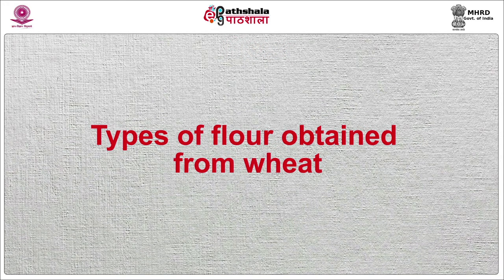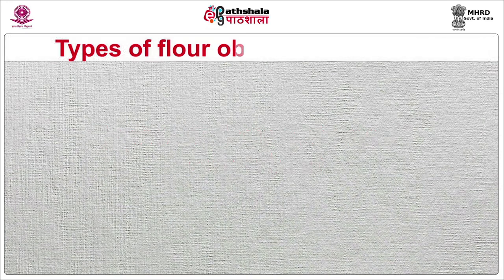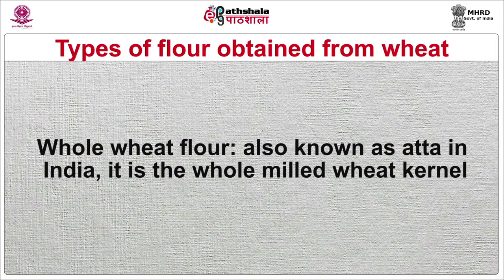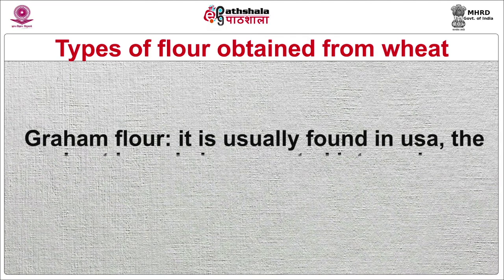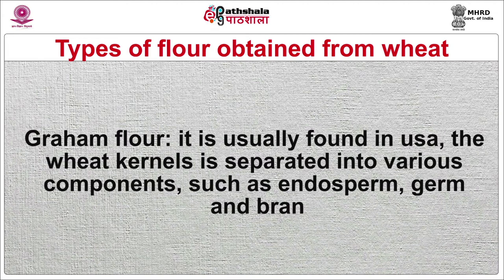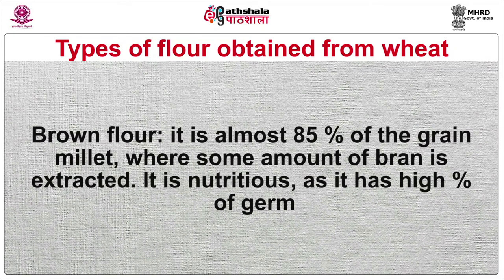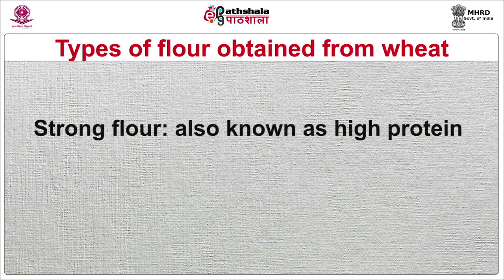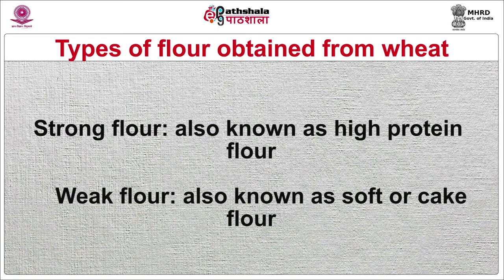We will now discuss different types of flour obtained from wheat. The first is whole wheat flour, also known as atta in India — it is the whole milled wheat kernel. Gram flour is usually found in the USA, where the wheat kernel is separated into various components such as endosperm, germ and bran. Brown flour is almost 85% of the grain milled, where some amount of bran is extracted; it is nutritious as it has a high percentage of germ. Strong flour is also known as high protein flour. Weak flour is also known as soft or cake flour.